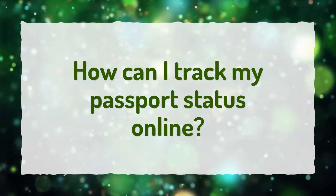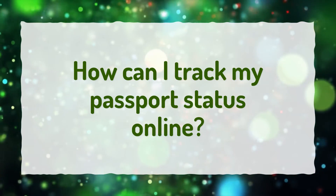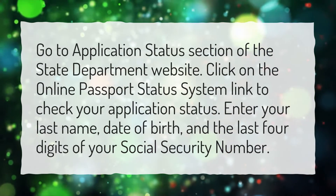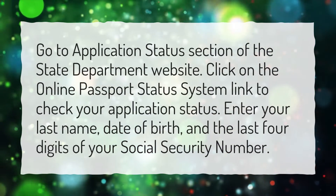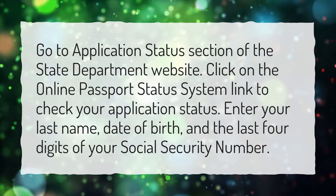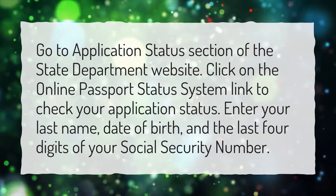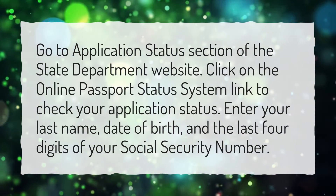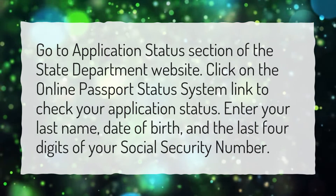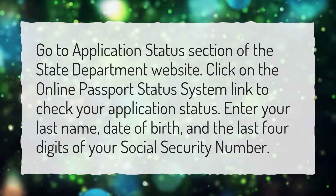How can I track my passport status online? Go to the Application Status section of the State Department website. Click on the Online Passport Status System link to check your application status. Enter your last name, date of birth, and the last four digits of your social security number.